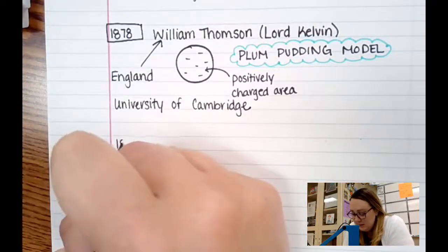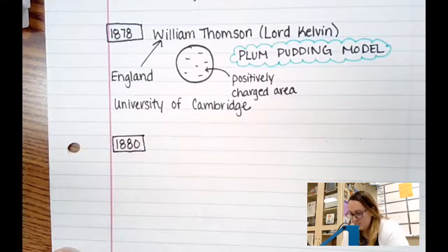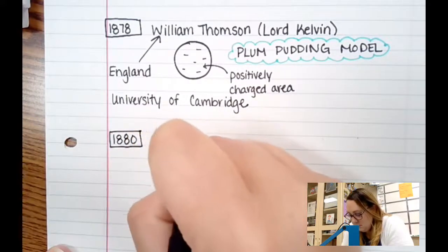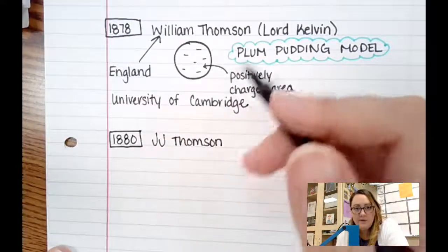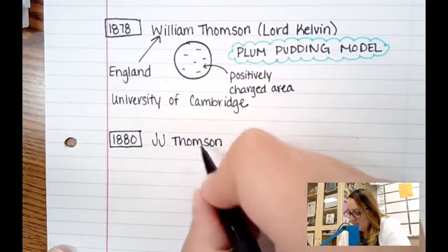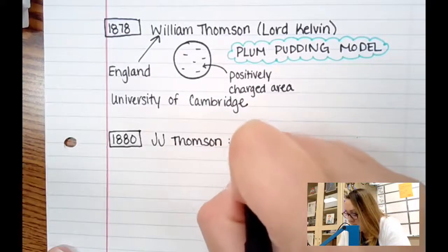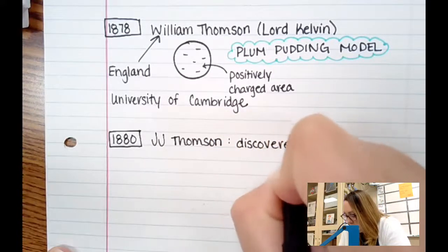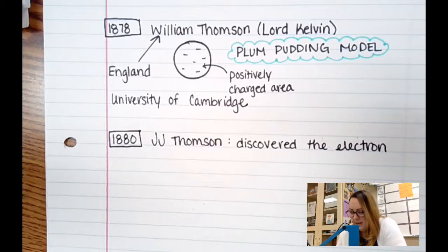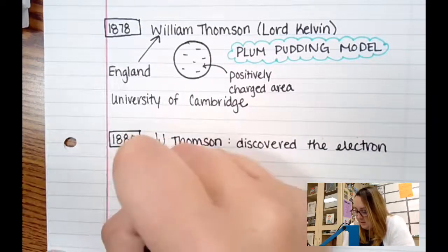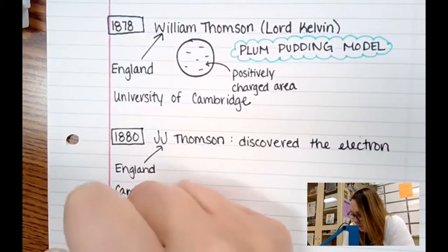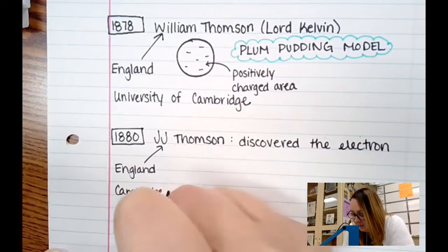So now we go about to the year of 1880 to a guy named JJ Thompson. And now it's really confusing because these guys have the same last name. JJ Thompson is credited with discovery of the electron. He is also from England. He also stayed at Cambridge University.